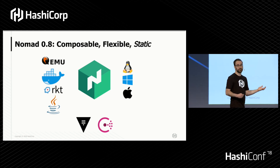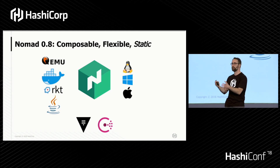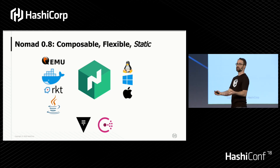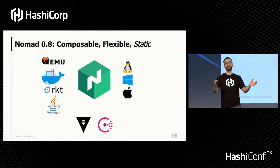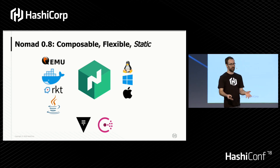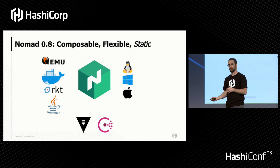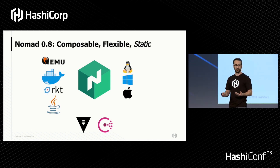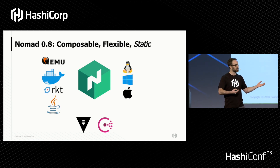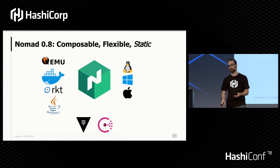So Nomad as of today, the 0.8 release, is composable. It's one component of your platform. It's flexible — we'll try to run anything anywhere. But it's static. What we ship to you is all you can use. It's not easily extensible. If you do want to add to Nomad, that requires going to GitHub, forking the project, submitting a PR, opening issues, communicating with us directly, and then waiting for the next release of Nomad before that feature ever ships.